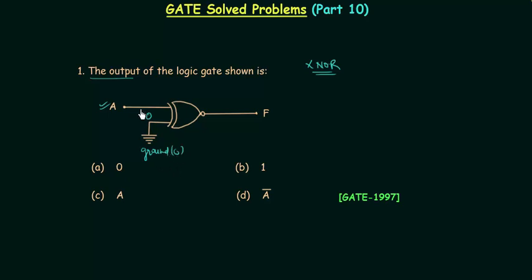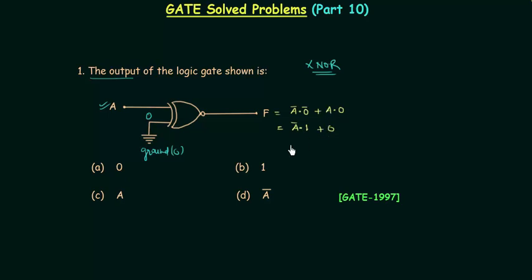With first input A and second input zero, for an XNOR gate the output F equals (A complement AND complement of zero) OR (A AND zero). Complement of zero is one, so we get A complement AND one, which is A complement, OR A AND zero which is zero. So finally the output is A complement, and option D is the correct answer.